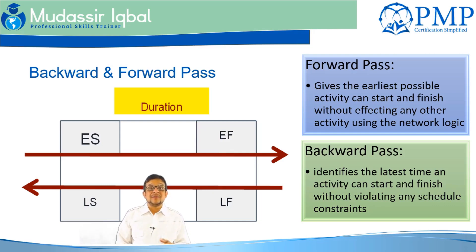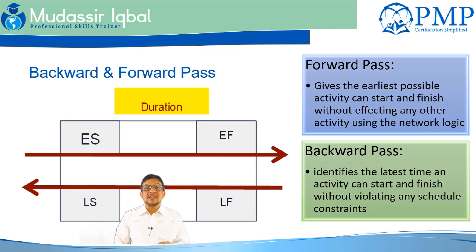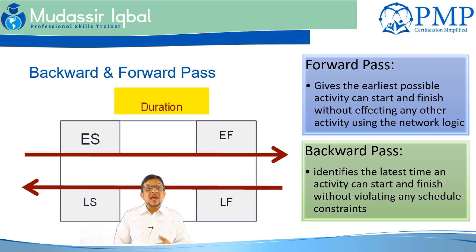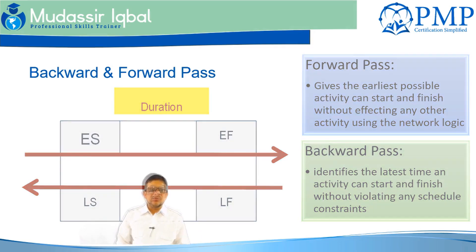This delay, or float, is calculated as early start minus latest start. It allows us to identify whether we need to lead or lag an activity based on resources, timeline, or day of the week. This concludes the discussion on forward and backward pass. Thank you very much for your time.